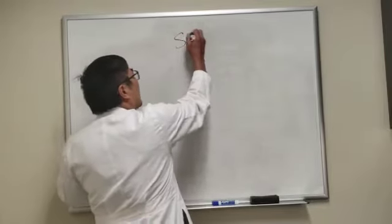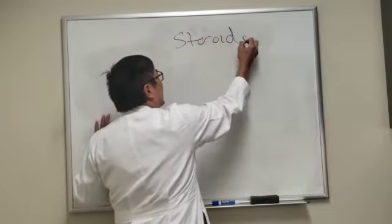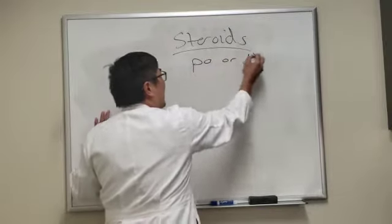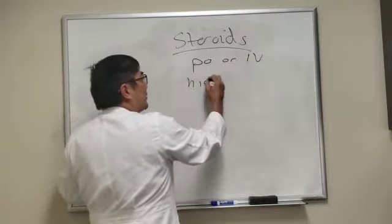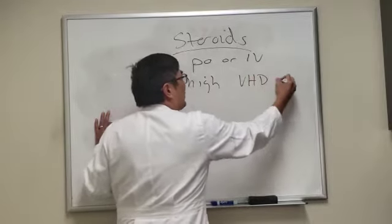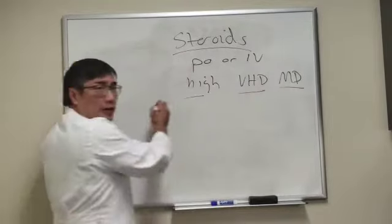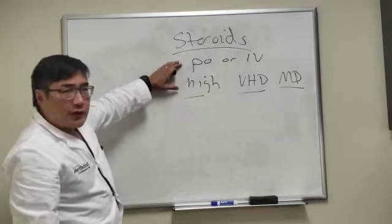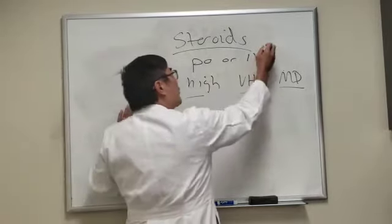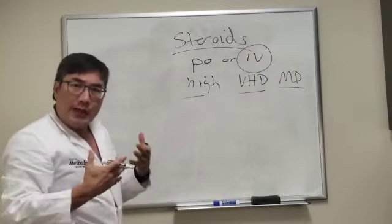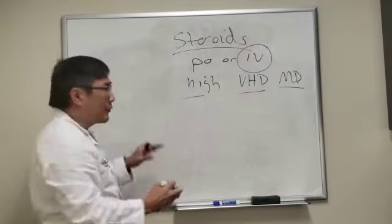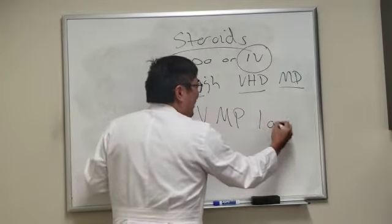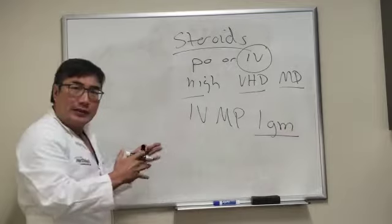The question is: with corticosteroids, what difference does it make when we use them PO versus IV, and whether we're using high dose, very high dose, or mega dose? For some of our disorders we're going to choose intravenous steroids. In neuro, that's usually methylprednisolone, and our go-to dose is normally one gram of methylprednisolone for three to five days.